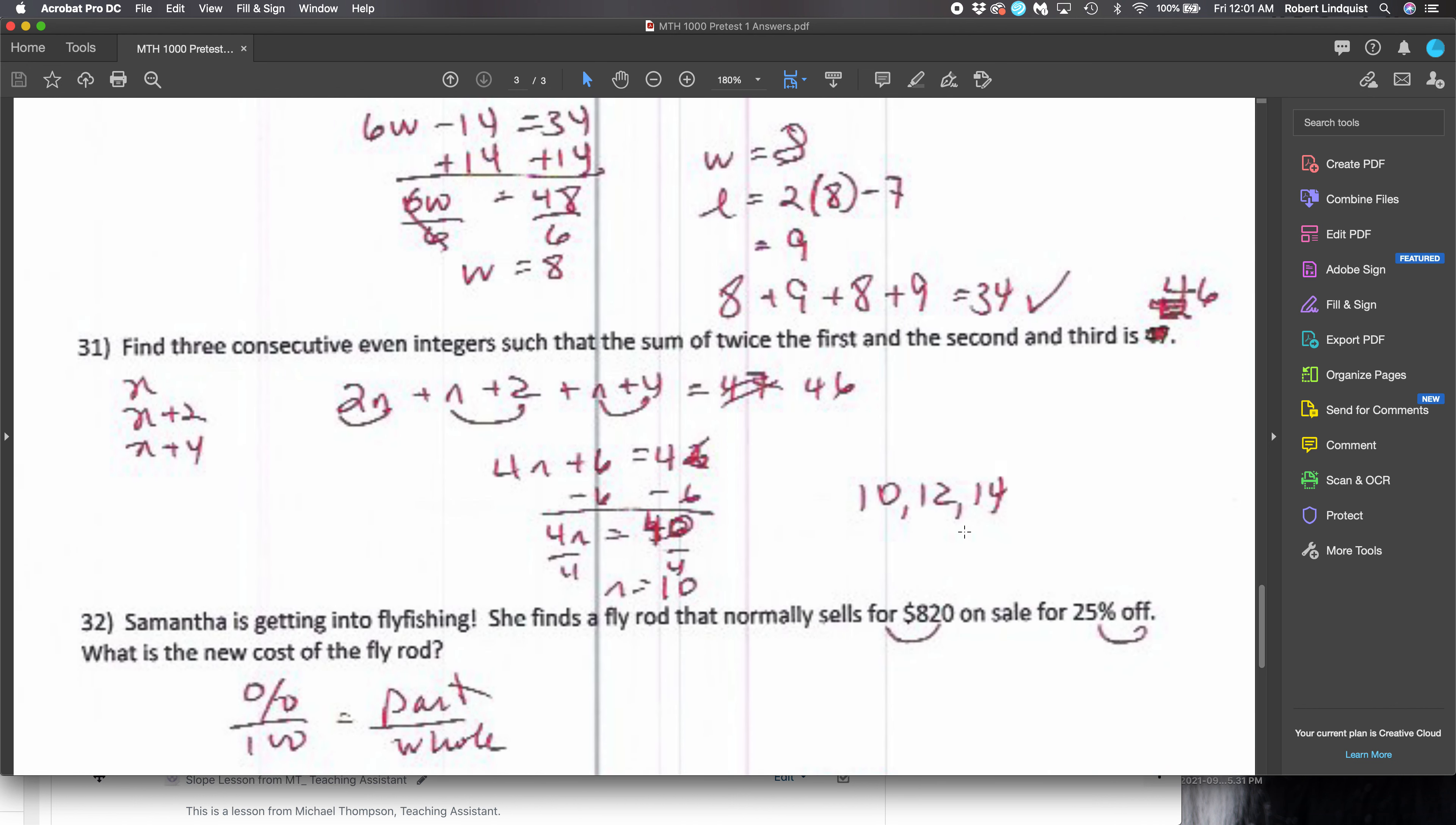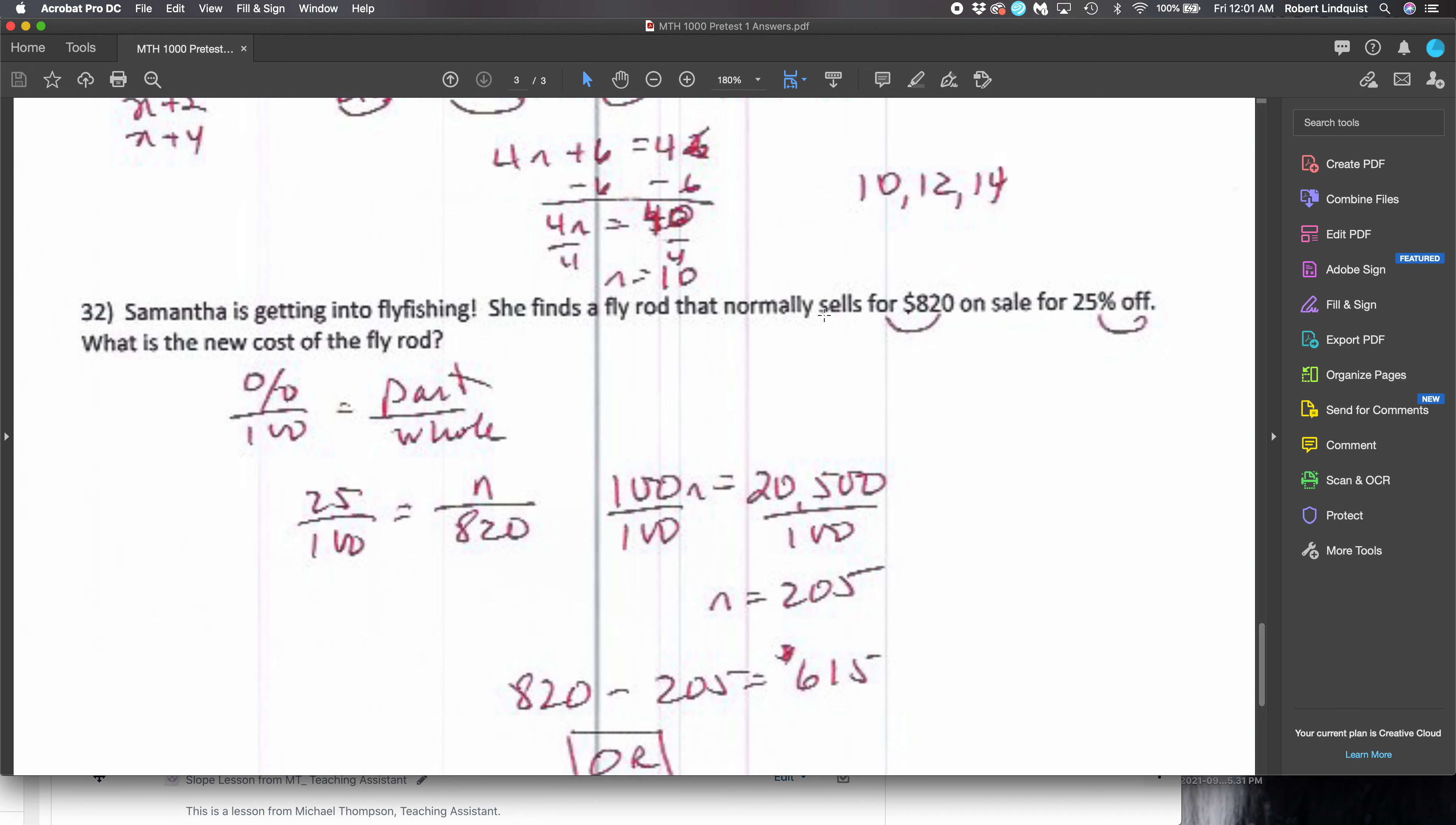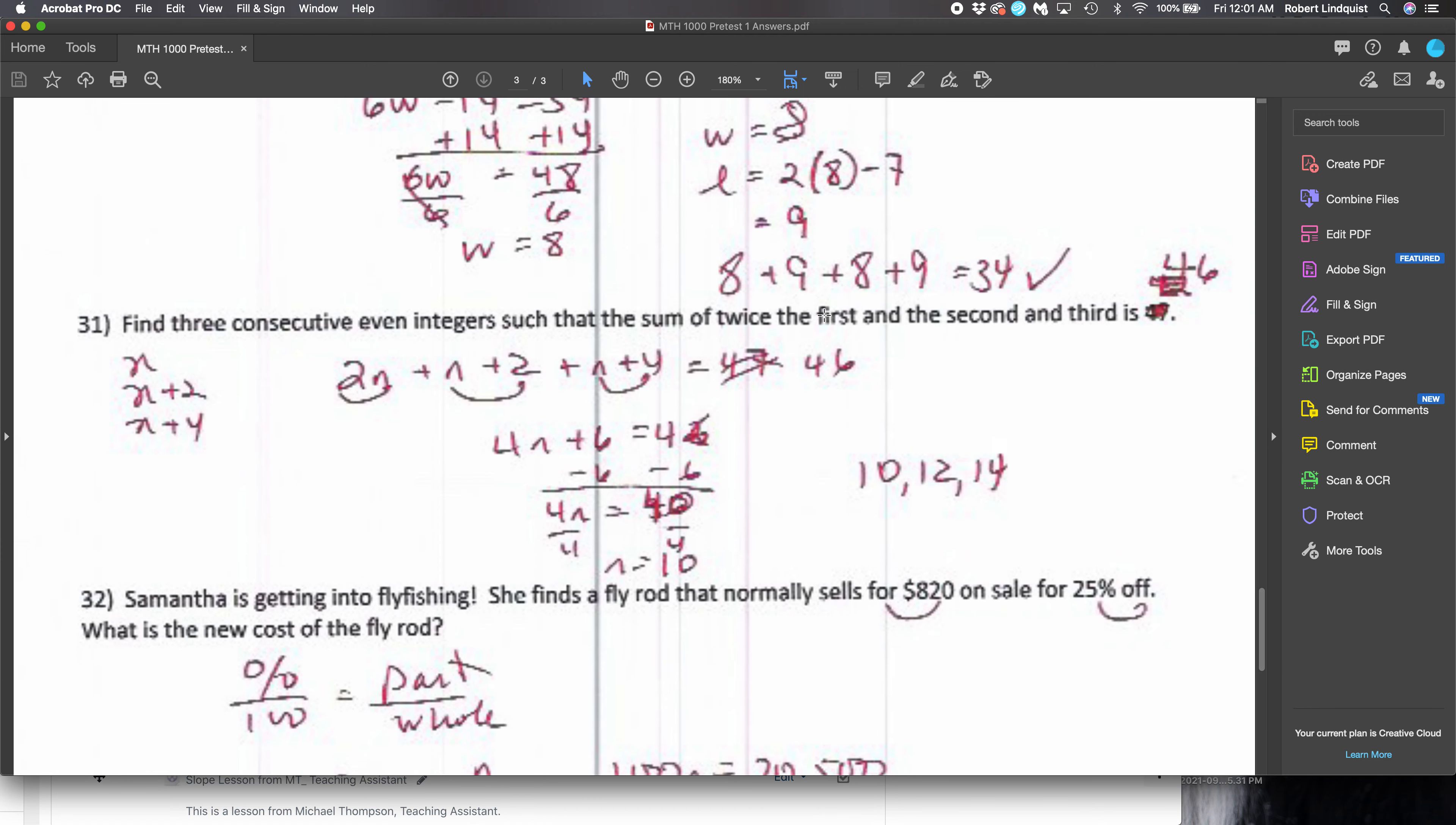So these little hoops represent all four sides, and then I do a same side, same operation situation. Always work it out so that once I get my answer I can check myself. Three consecutive integers such that the sum of twice the first. So here are my three integers: n, n plus 2, n plus 4. But twice the first is 2n, and the second and the third. So here's the second guy, n plus 2. Here's the third guy, n plus 4. So if I add up all of those I get 46. I had originally had a mistake of 47, but I fixed it on the Moodle page and I fixed it here. Okay, so I come up with 10, 12, 14. And we already went over Samantha's fly fishing problem.